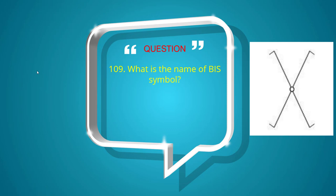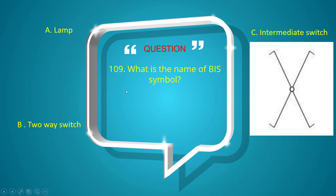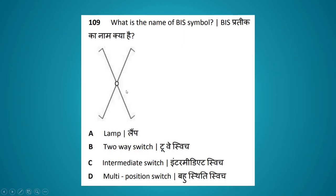What is the name of the BIS symbol shown? Options: lamp, two-way switch, intermediate switch, multi-position switch. The answer is intermediate switch.